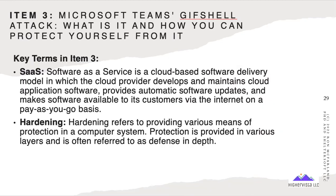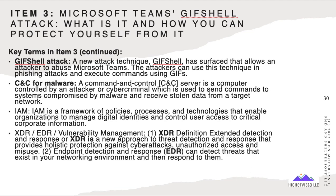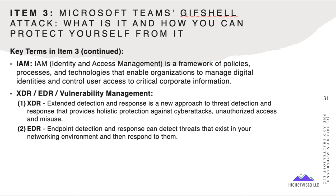Key terms: SaaS — Software as a Service, cloud-based. Hardening refers to providing various means of protection in a computer system or tools. GIF shell attack is another type of shell attack used as command and control for malware. IAM — Identity and Access Management — is a framework of policies, processes, and technologies; think Microsoft Active Directory with role-based access control. XDR — Extended Detection and Response — is a newer approach. EDR — Endpoint Detection and Response — ESET, mentioned earlier, provides an EDR solution, as do other vendors.